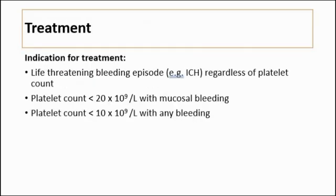The indications for treatment of ITP are as follows. First, if the patient has a life-threatening bleeding episode — for example, intracranial hemorrhage — treatment is given regardless of the platelet count. Second, if the platelet count is less than 20 × 10⁹ per liter with mucosal bleeding. Third, if the platelet count is less than 10 × 10⁹ per liter with any sort of bleeding.